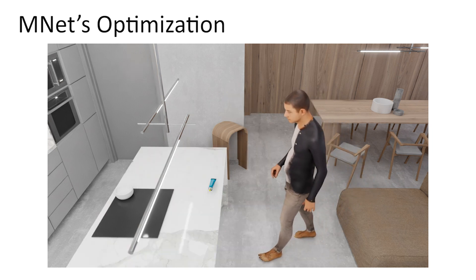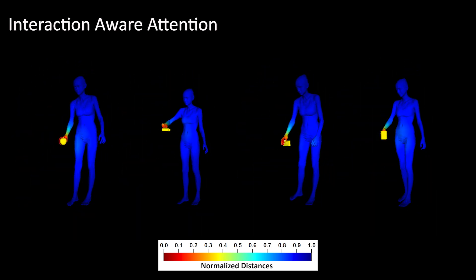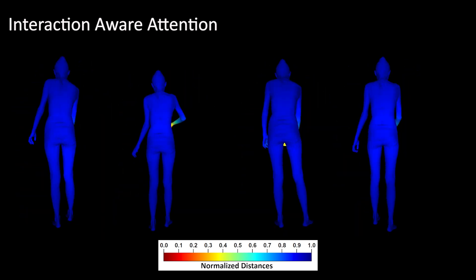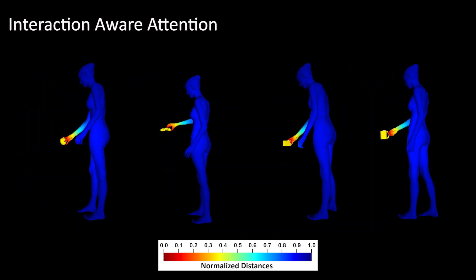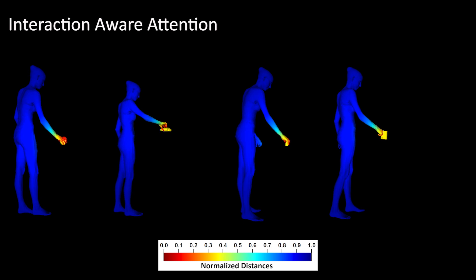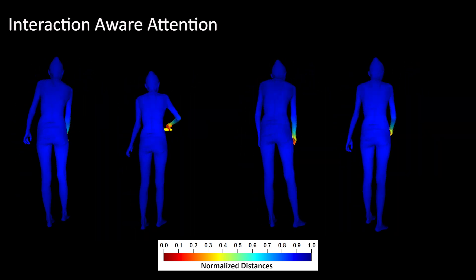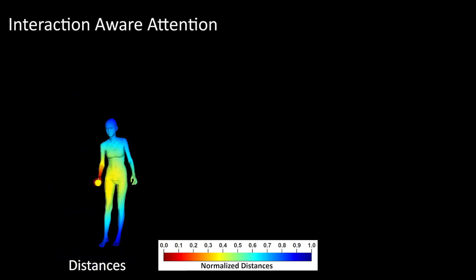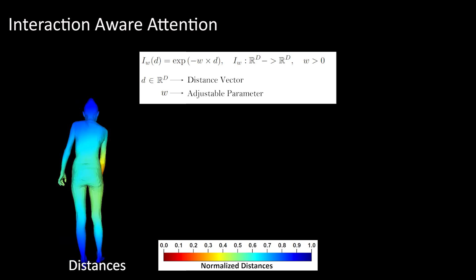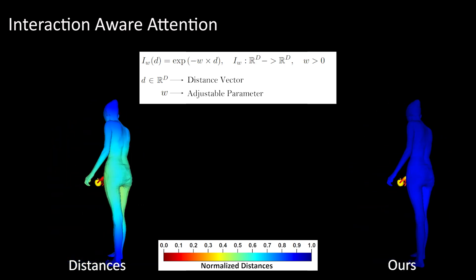Our second novelty is an interaction-aware attention representation for body-to-object distances that regulates the influence of all vertices on the network's reasoning when using them as network inputs. In technical terms, our attention scheme computes body-to-object distances on the fly and applies an exponential function to them to weight vertices that are closer to objects higher than the ones far away.